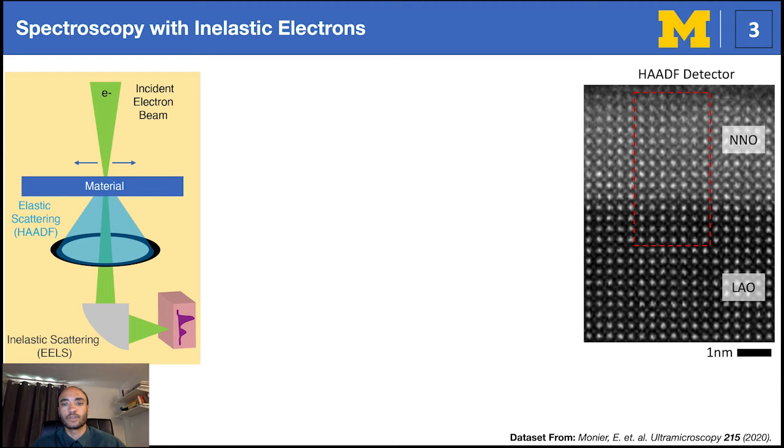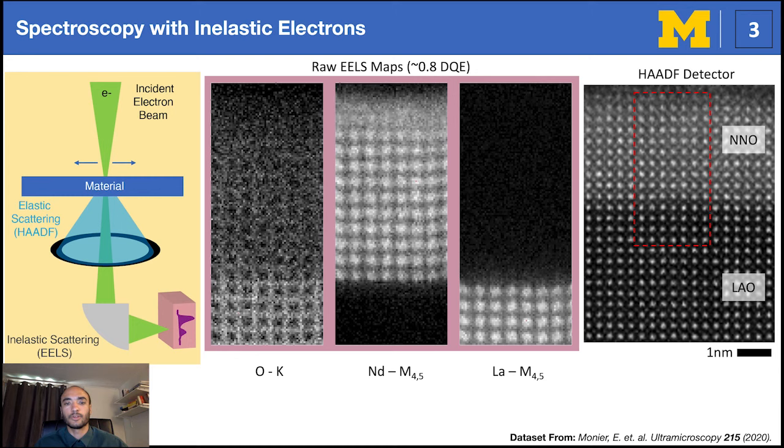As an example, we demonstrate how EELS can map the neodymium, lanthanum, and oxygen distribution for an atomically sharp neodymium nickel oxide thin film grown on a lanthanum aluminum oxide substrate. Similar to EDX, however, EELS signal is often concealed by shot noise.